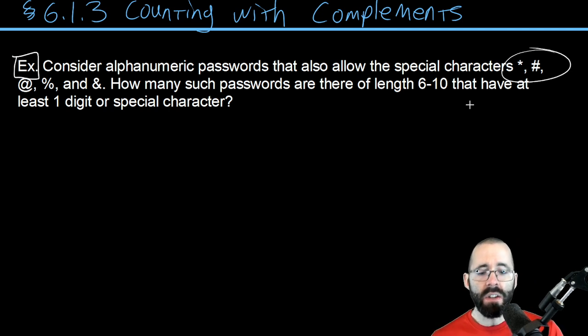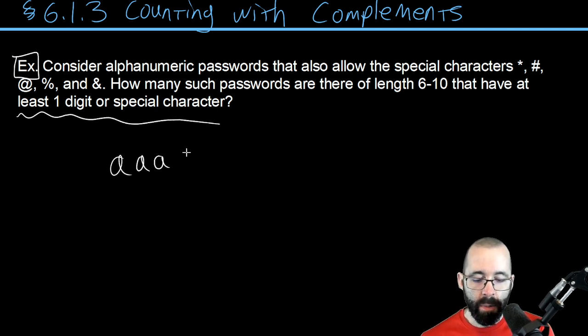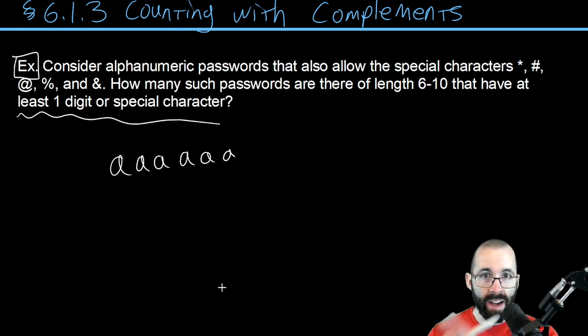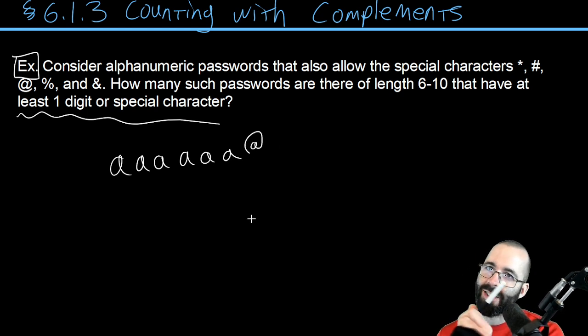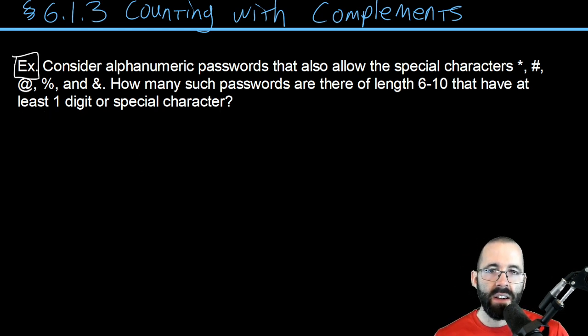But we also are putting a little requirement. We're saying I don't want your password to look like this. I'm looking at you, anyone out there with a password like this—we don't want it. We need at least one digit or special character. You do this, now you've got a solid password. So how do we do this? Conceptually, very straightforward—just need to count them all up.